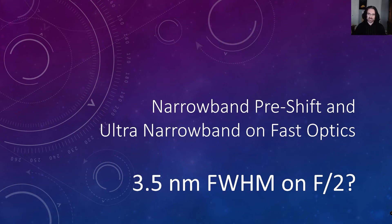Hi, I'm Brent Mantooth and I have done a little bit more work thinking about some of the narrowband filters from some of my last videos and thought I could use some of these examples to better illustrate and understand what's going on with pre-shift and narrowband filters and how to think about ultra narrowband on fast optics. For example, I've seen some filters lately out there that are claiming a 3.5 nanometer bandwidth that can be used on F2 optics. So let's see what that might look like.